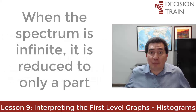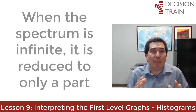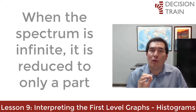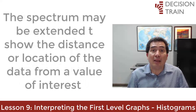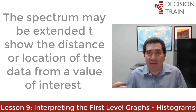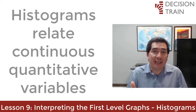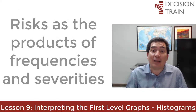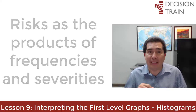Obviously, when this spectrum of values is infinite or very large, it is reduced to only a part that shows the trend or behavior of the population. At other times, this spectrum is extended to show the distance or location of the simulated data from a value of interest. Histograms are used to relate continuous quantitative variables, which is a case of risks calculated by the product of their frequencies and their severities.